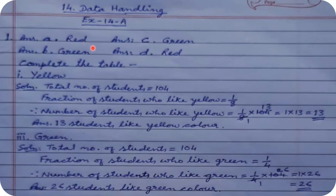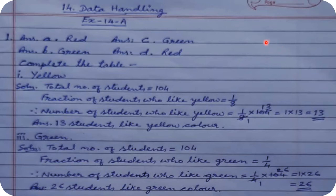Which is the second most favorite color? If you see the pie chart, it is green because it occupies more of the pie chart. Which color is liked by more students — green or purple? Green is liked by more because one fourth of the whole circle is green, but only one eighth is purple.